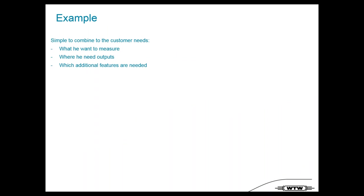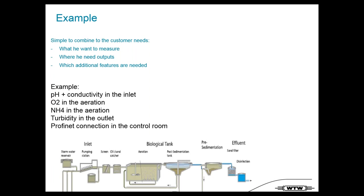The outcome is one platform requiring only one power connection and one connection to a SCADA system. Here is a simple example: ask what the customer wants to measure, which outputs are needed, and which additional features are required. For instance, pH and conductivity at the inlet, oxygen and ammonium at aeration, turbidity at the outlet, and data transfer via Profinet to the control room.